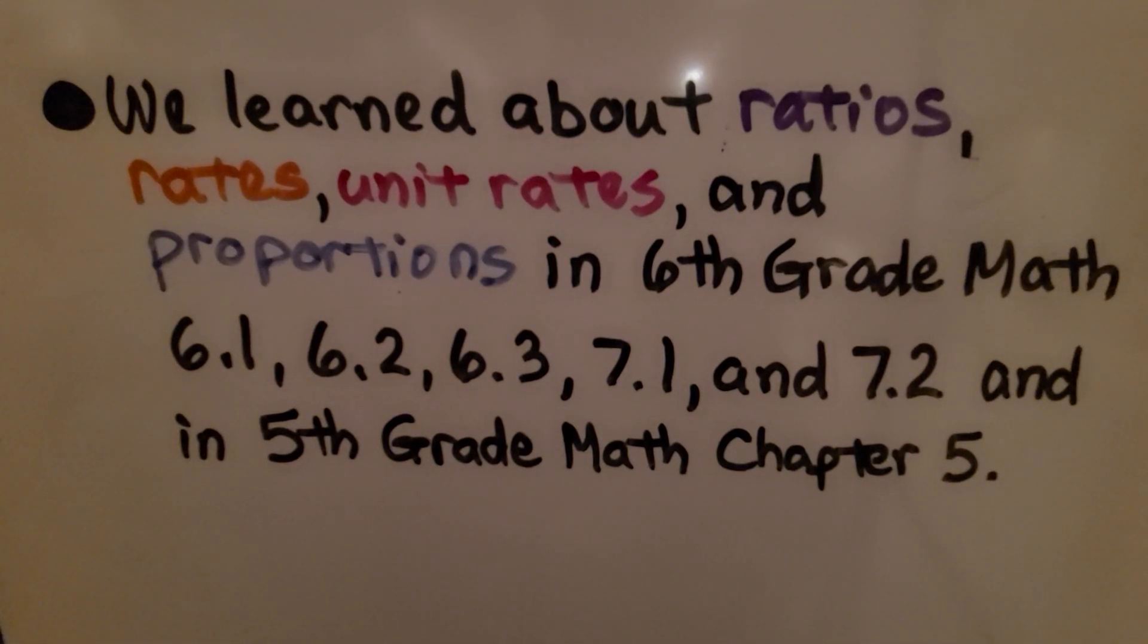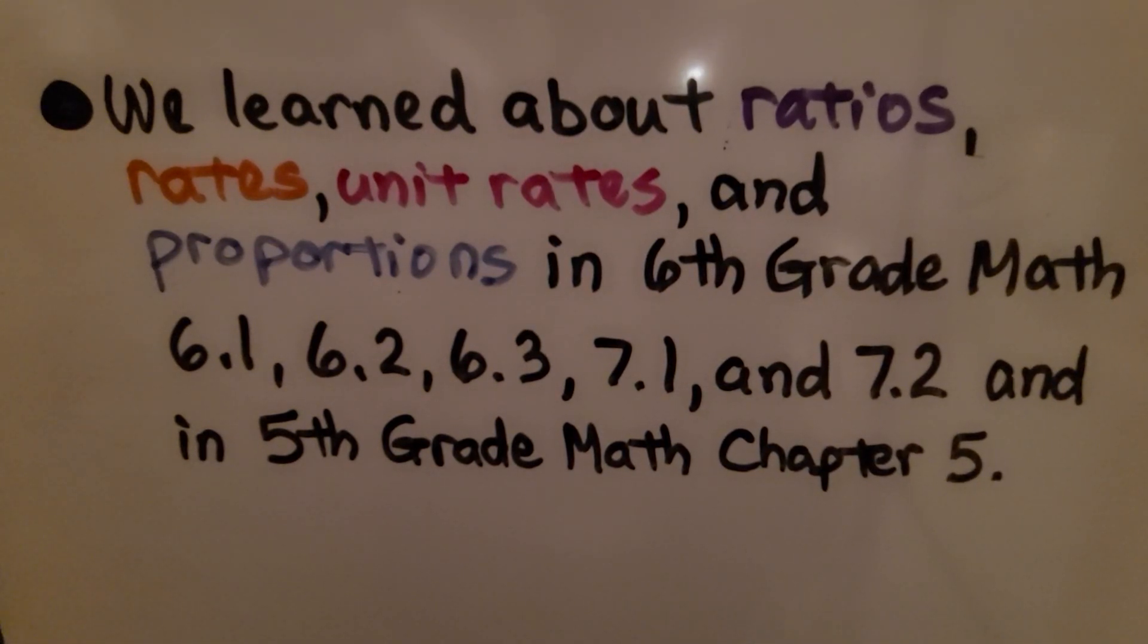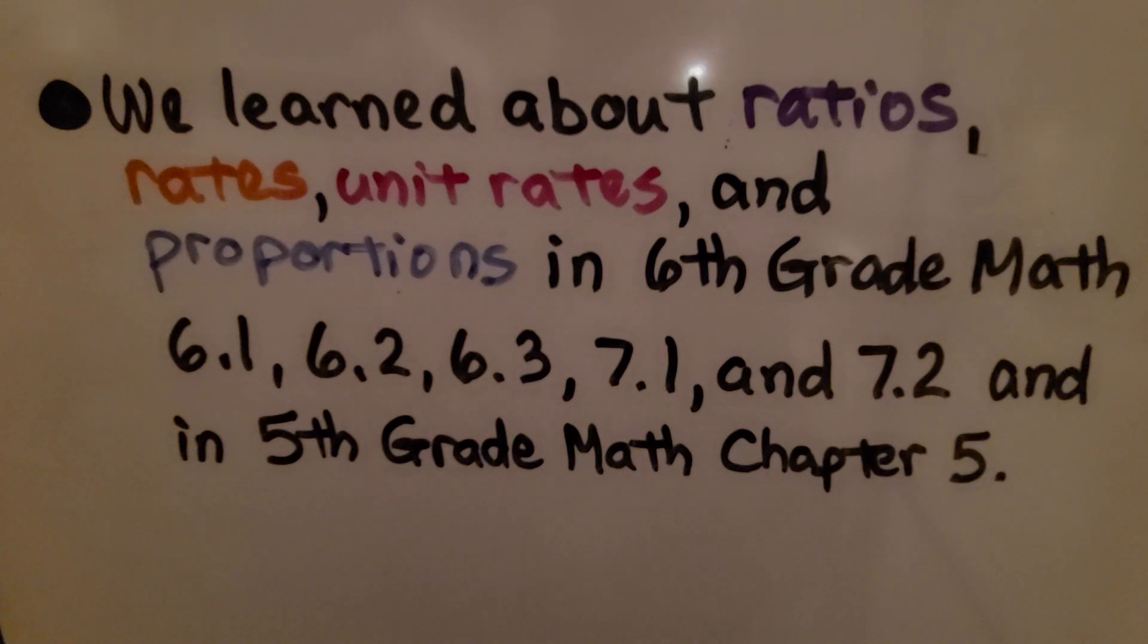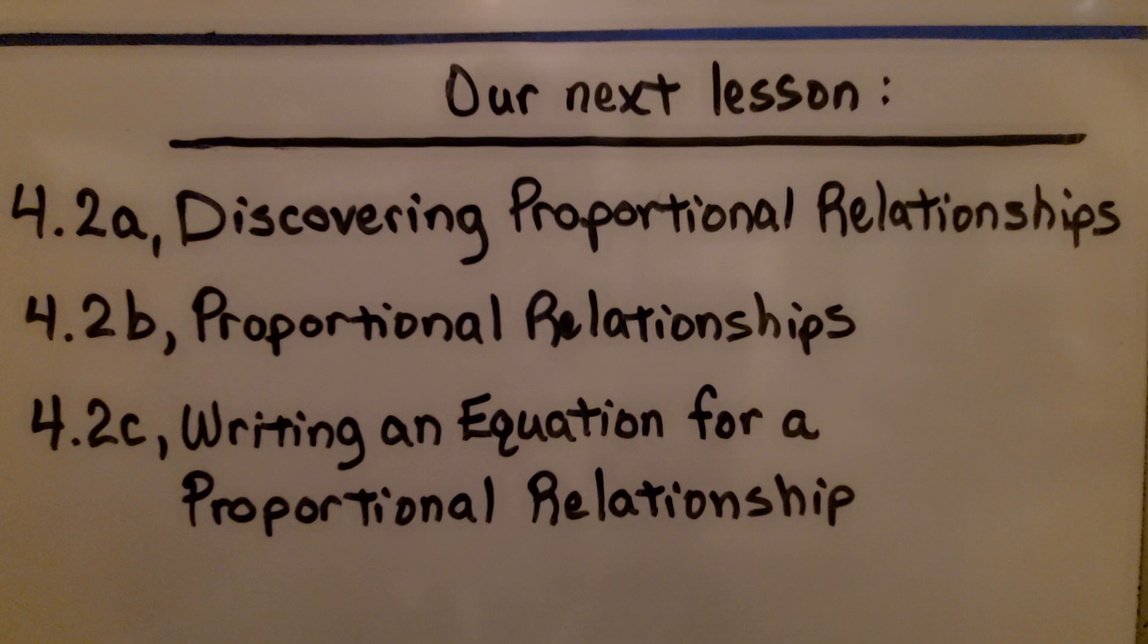We learned about ratios, rates, unit rates, and proportions in sixth grade math in chapters 6 and 7, and in fifth grade math in chapter 5. Hopefully you remember your fifth grade and sixth grade lessons when we learned about rates and ratios and unit rates. We're finished with 4.2a. We're going to move on to 4.2b and talk about proportional relationships some more.